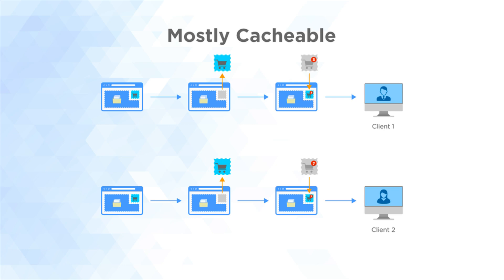With ESI enabled, you can say: this page is mostly public — let's cache it, punch a few holes in it for the private content, and save that content in the private cache.